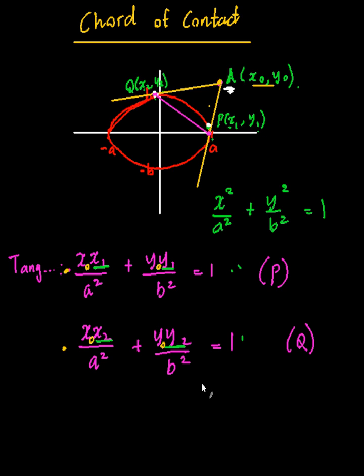So because x1 and x2 is the only thing that's changing over here I can replace that as being the variable and say that's going to be x0 x on a squared. And with the same idea this is going to be y0 y on b squared is equal to 1.